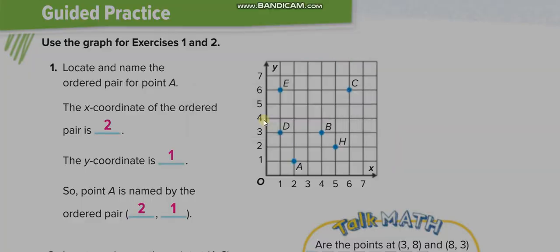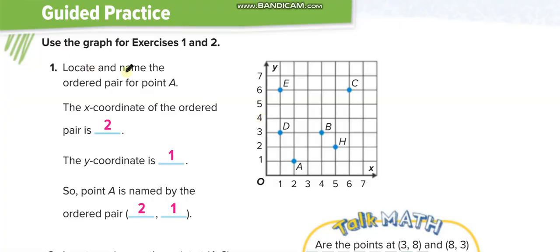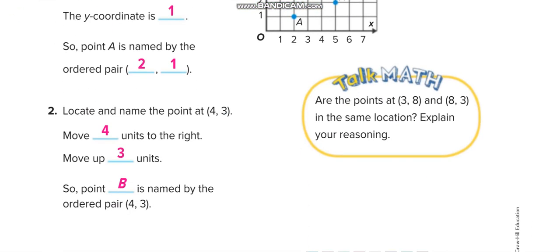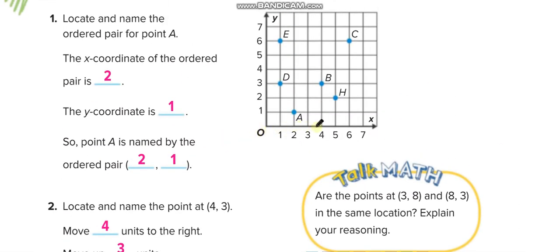Locate and name the ordered pair for point A. Down is 2, left is 1, so (2, 1). Now locate and name the point at (4, 3). First, you see 4 on the X-axis and 3 on the Y-axis. The point is B.